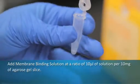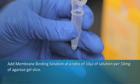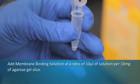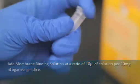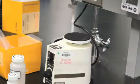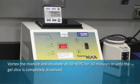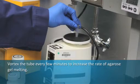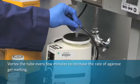Add membrane binding solution at a ratio of 10 microliters of solution per 10 milligrams of agarose gel slice. Vortex the mixture and incubate at 50 to 65 degrees Celsius for 10 minutes or until the gel slice is completely dissolved. Vortex the tube every few minutes to increase the rate of agarose gel melting.